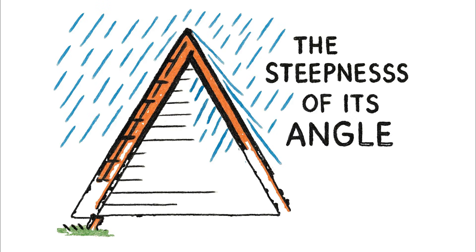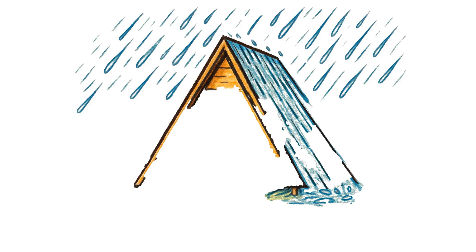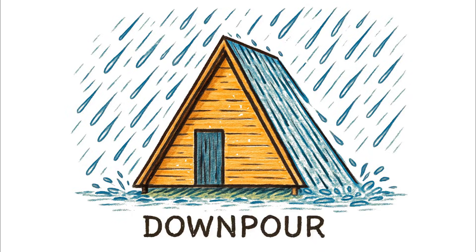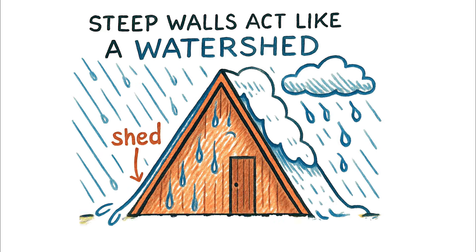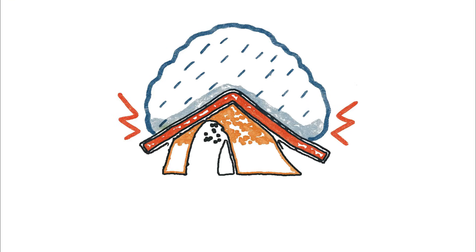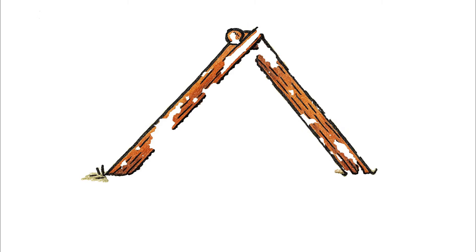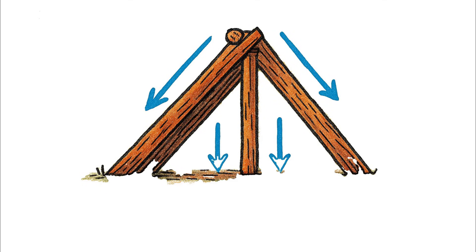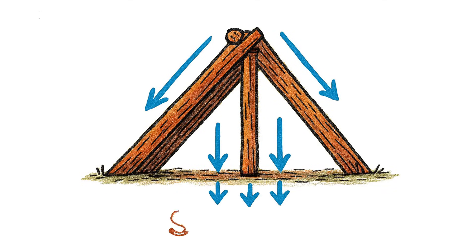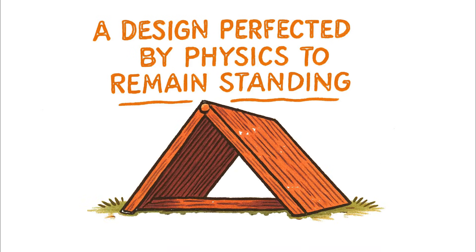The steepness of its angle is not an accident — it's a critical engineering decision. The steep walls act like a watershed, shedding environmental loads like rain and snow immediately. This prevents the catastrophic weight accumulation that could flatten a shelter with a shallower roof pitch. The forces are constantly being driven into the ground, making the structure incredibly stable against gravity and the elements — a design perfected by physics to remain standing.